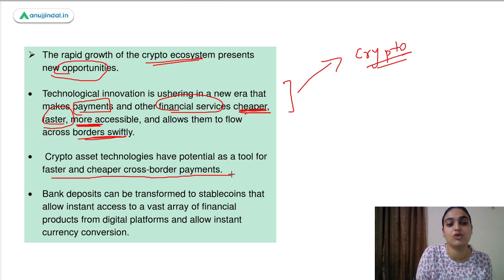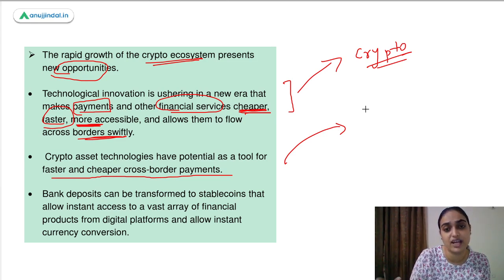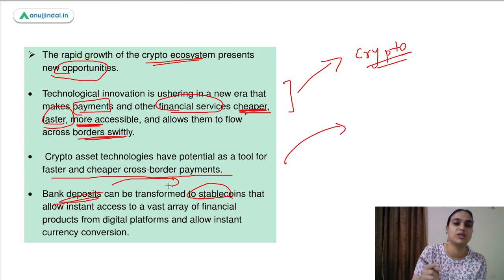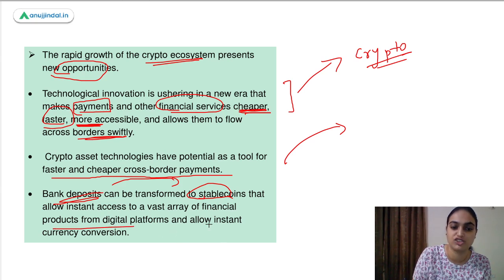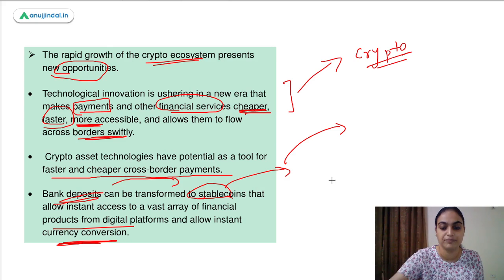Crypto is a tool for faster and cheaper cross-border payments — you don't need to deal with intermediaries or convert your currency and pay a lot of fees. Additionally, bank deposits can be transformed into stablecoins, and you can then utilize those stablecoins to use financial services. Stablecoins allow instant access to a vast array of financial products from digital platforms and allow instant currency conversion.